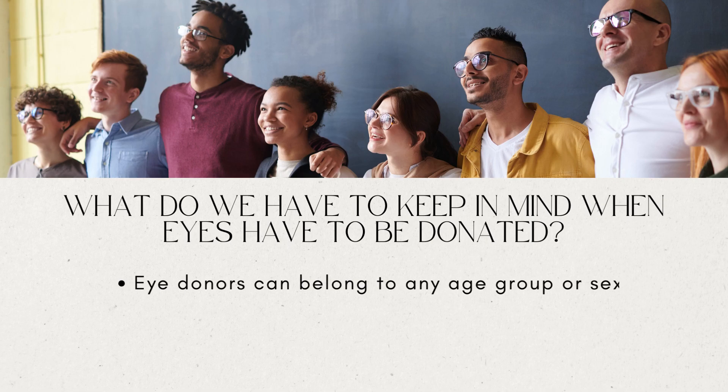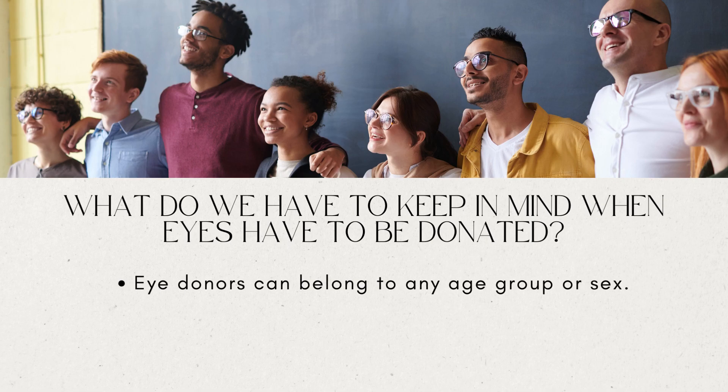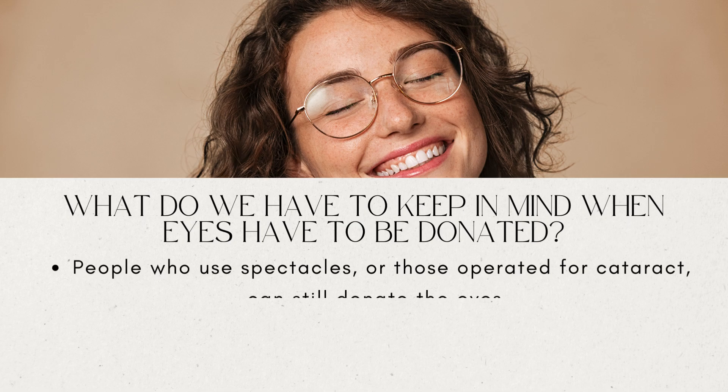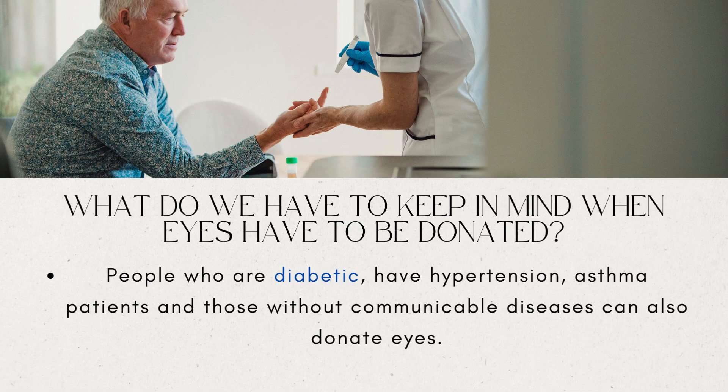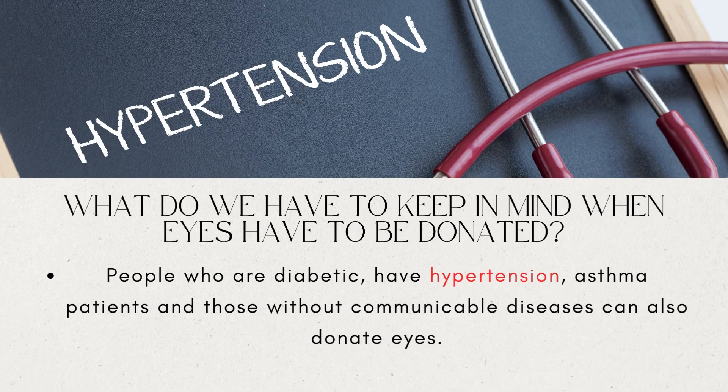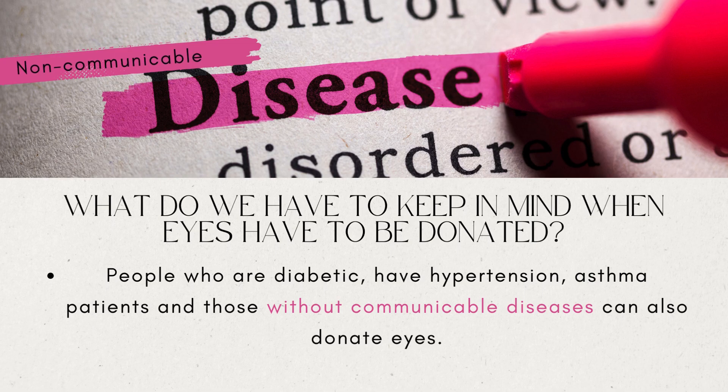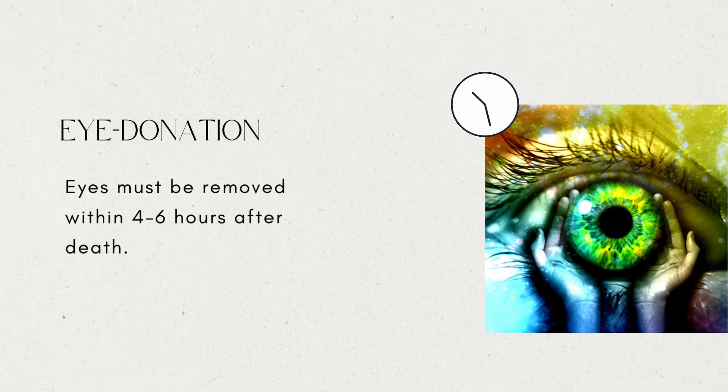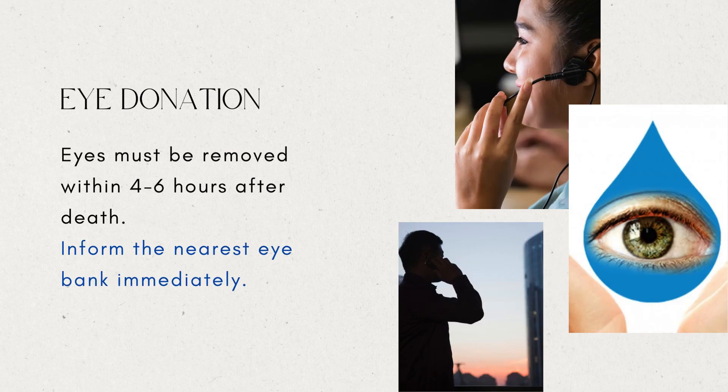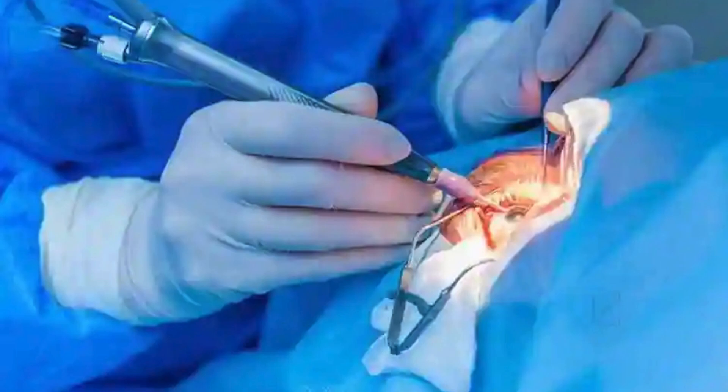What do we have to keep in mind when eyes have to be donated? Eye donors can belong to any age group or sex. People who use spectacles or those operated for cataract can still donate the eyes. People who are diabetic, have hypertension, asthma, or those without communicable diseases can also donate eyes. Eyes must be removed within 4-6 hours after death. Inform the nearest eye bank immediately. The eye bank team will remove the eyes at the home of the deceased or at a hospital. Eye removal takes only 10-15 minutes. It is a simple process and does not lead to any disfigurement.